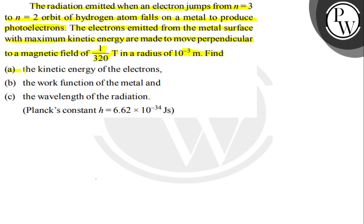We need to find: first, the kinetic energy of the electron; second, the work function of the metal; and finally, the wavelength of the radiation. We can take Planck's constant value as h = 6.62 × 10 raise to minus 34 joule second.